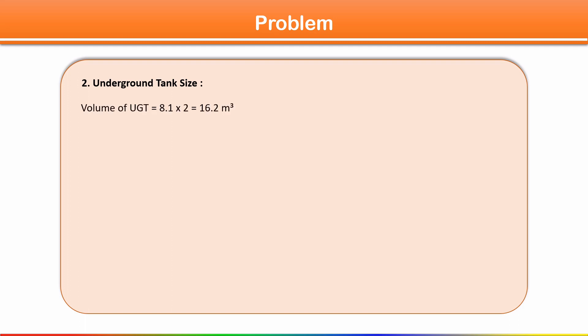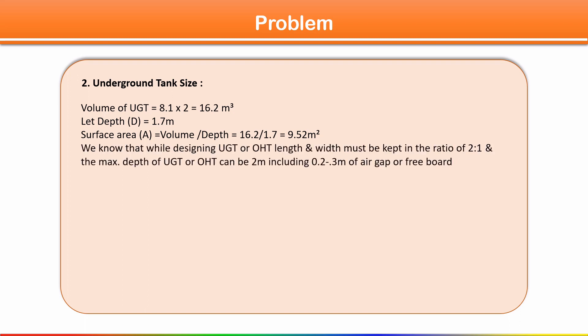For the underground tank, it must be designed for 2 to 3 days storage capacity. Designing for 2 days: volume = 8.1 × 2 = 16.2 cubic meters. Assuming depth of 1.7 meters (maximum 2 m including freeboard), surface area = 16.2 ÷ 1.7 = 9.52 square meters.